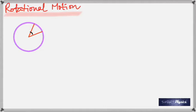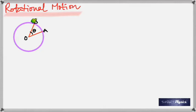Rotational motion means something is moving in a circle. In a certain time, it will make an angle theta. As the object moves from A to B, going in the counterclockwise direction — counterclockwise is taken as positive in physics — the angular displacement is theta, and let's say it took T seconds to do that.